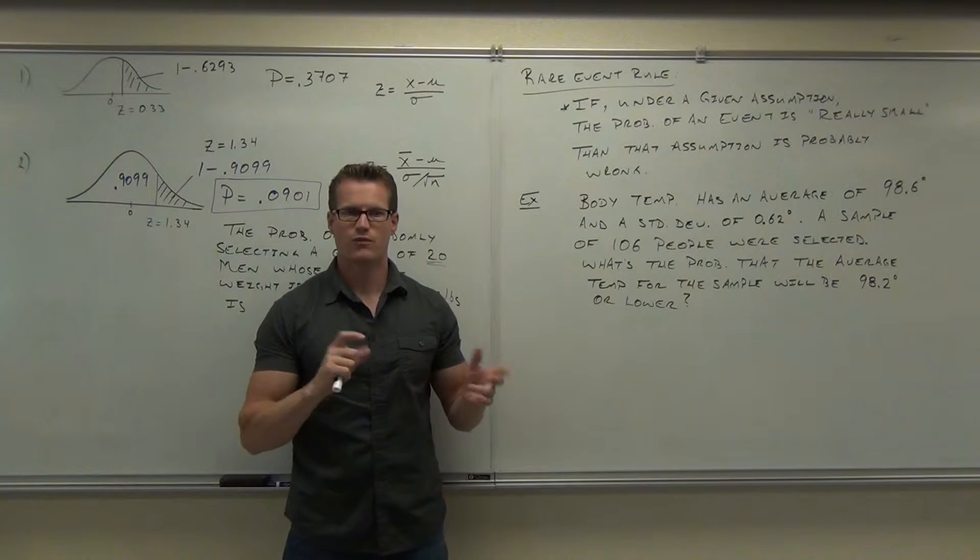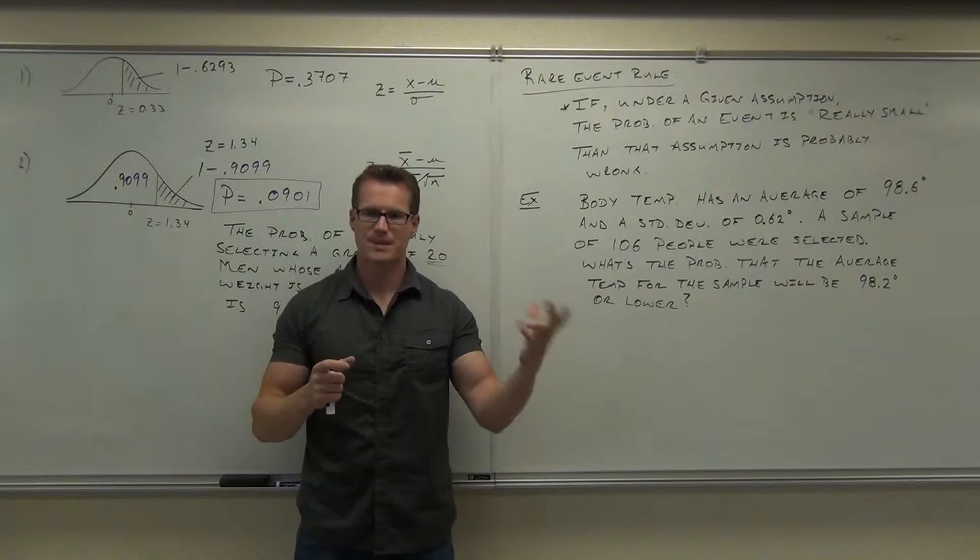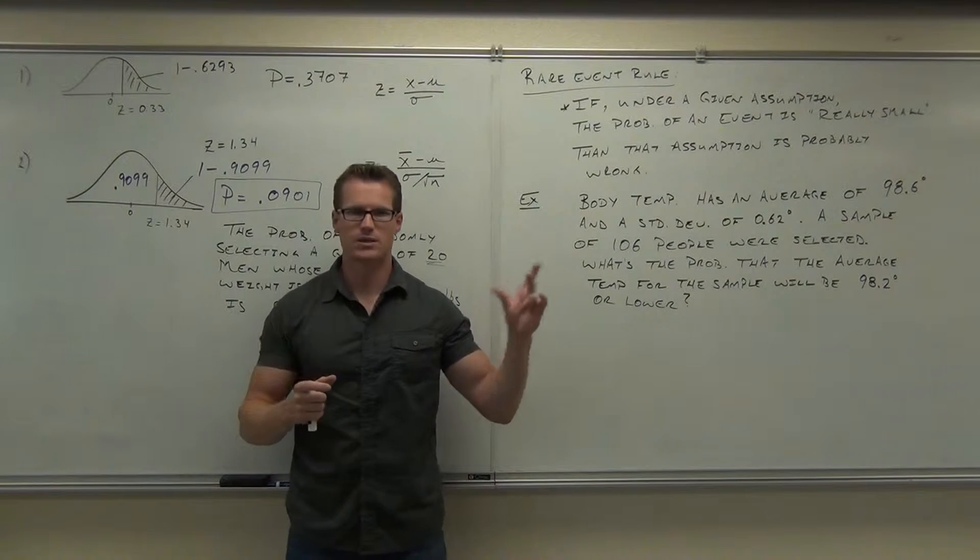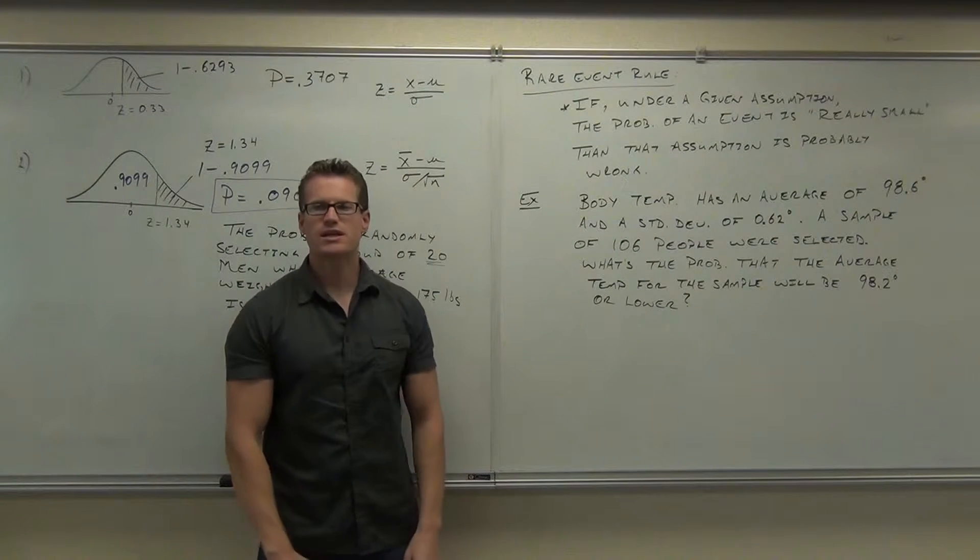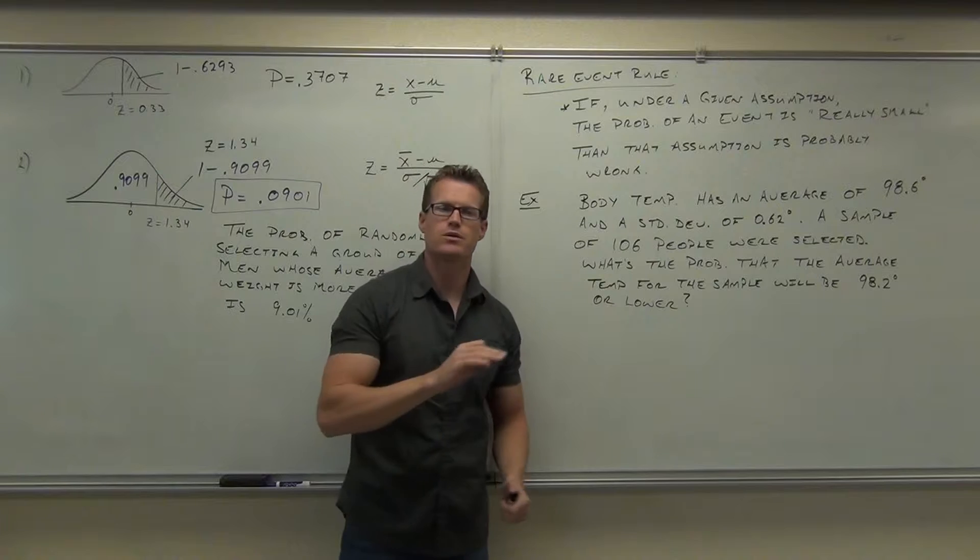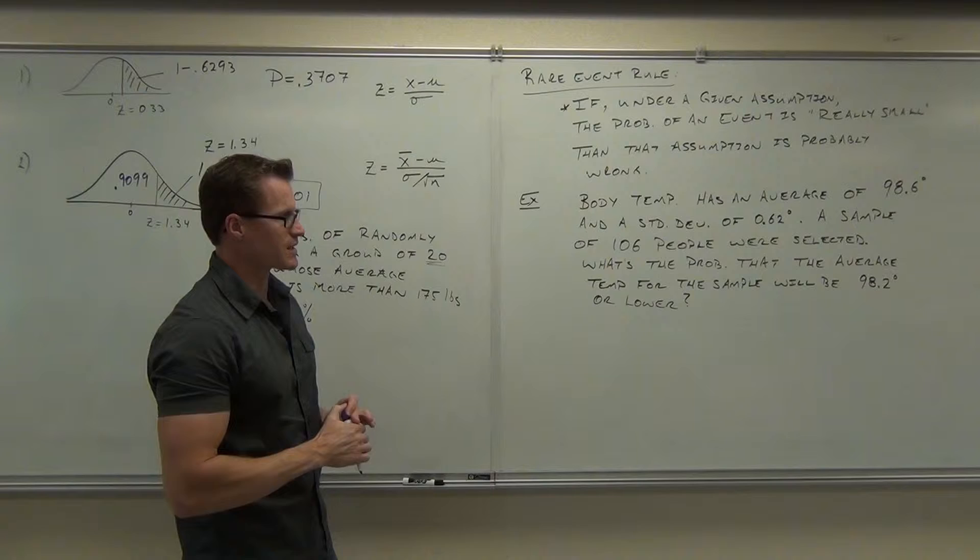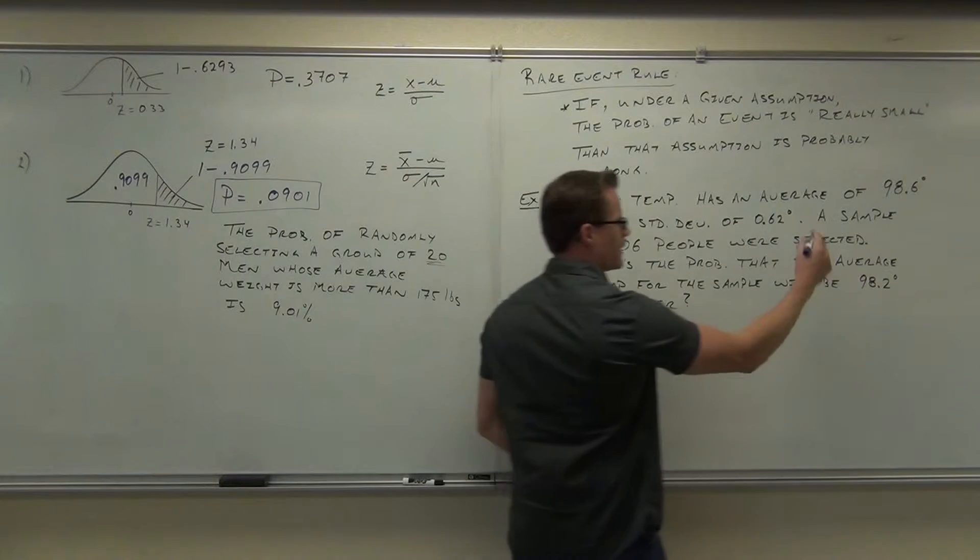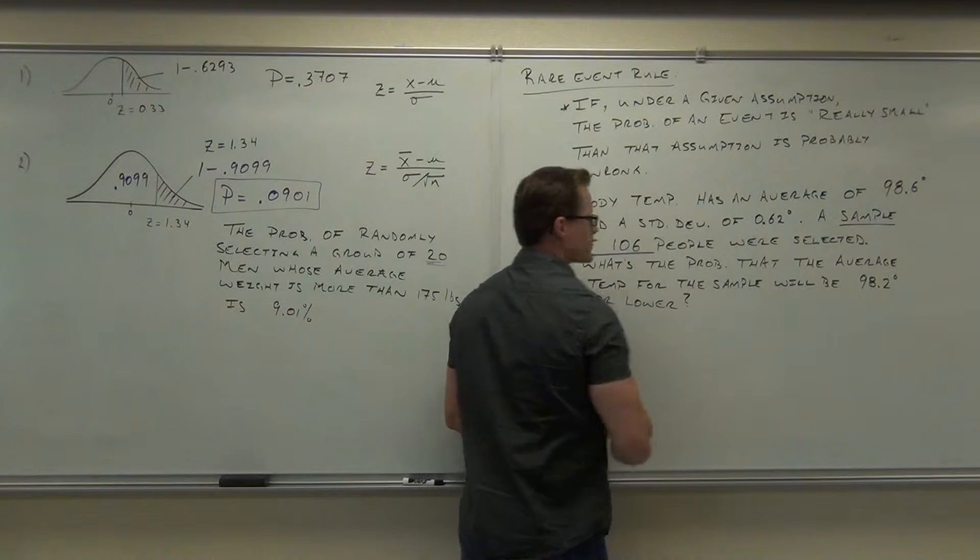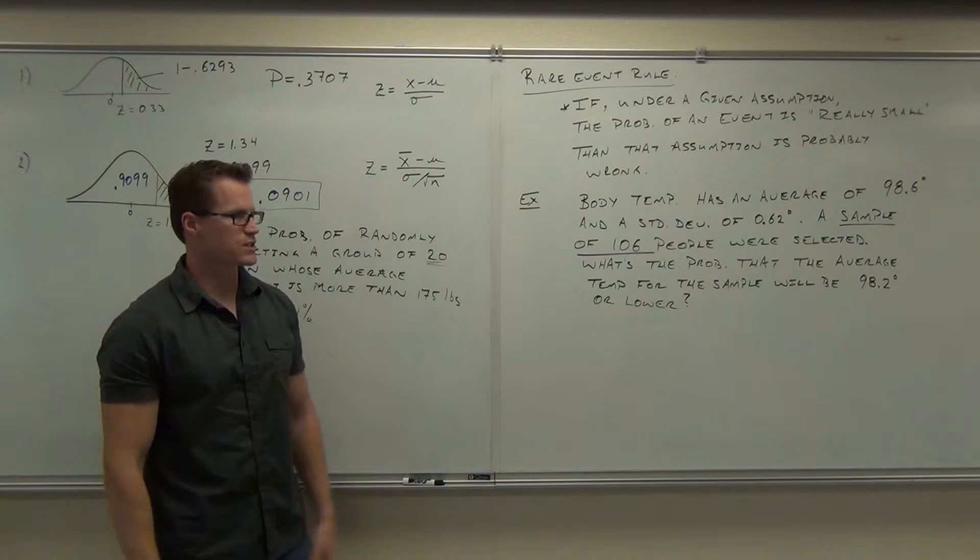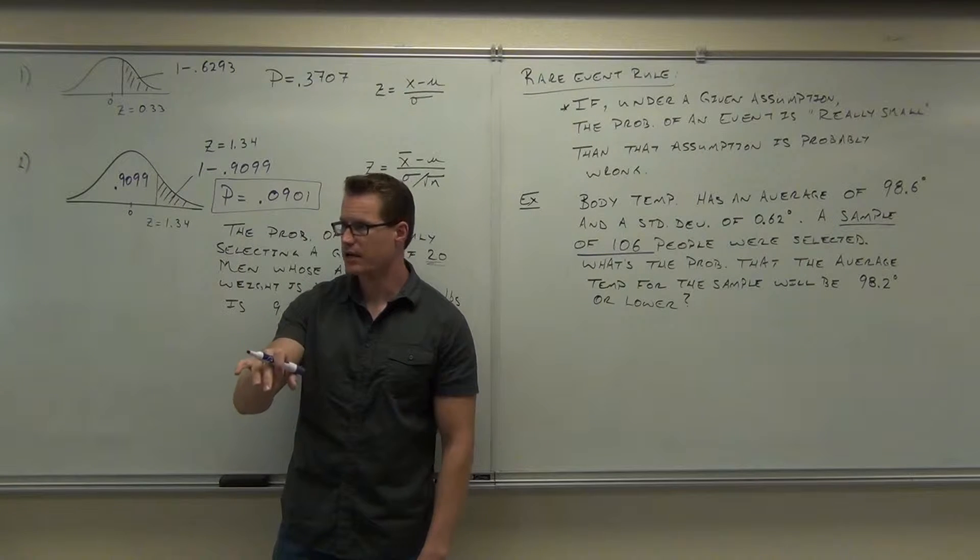If it was an individual, it would say find the probability that a randomly selected person, a randomly selected person, or one item. Here, this is saying a couple of keywords for you that clue you into a few things, clue you in on which formula to use. First thing it says is a sample of a certain number of items, a sample of 106 items. There's got to be somewhere where you're going to plug in that 106 items.